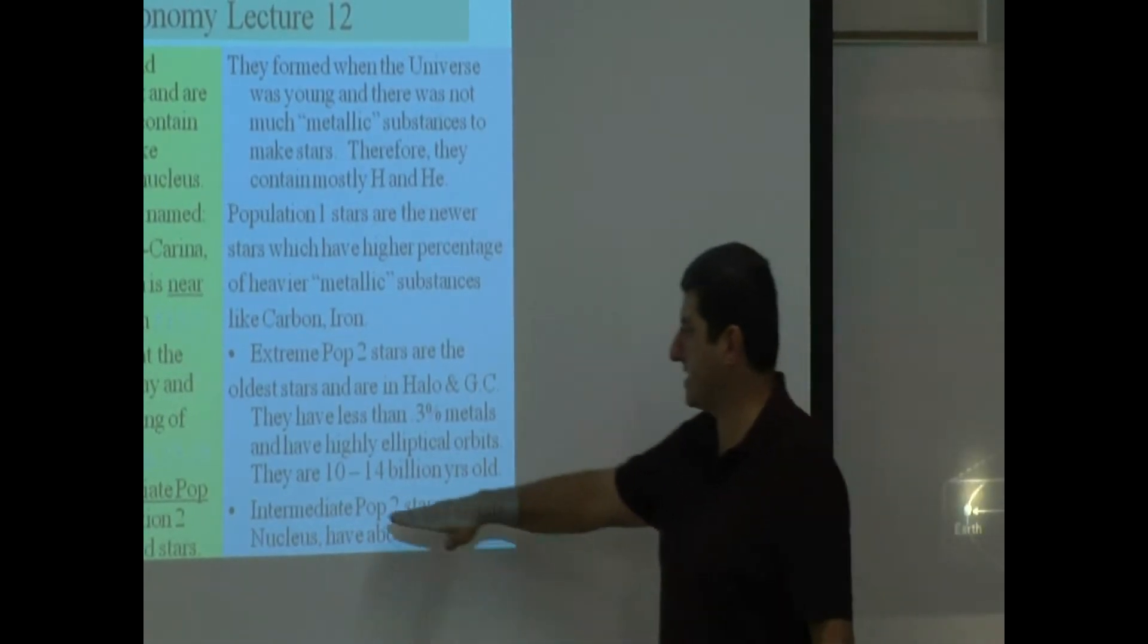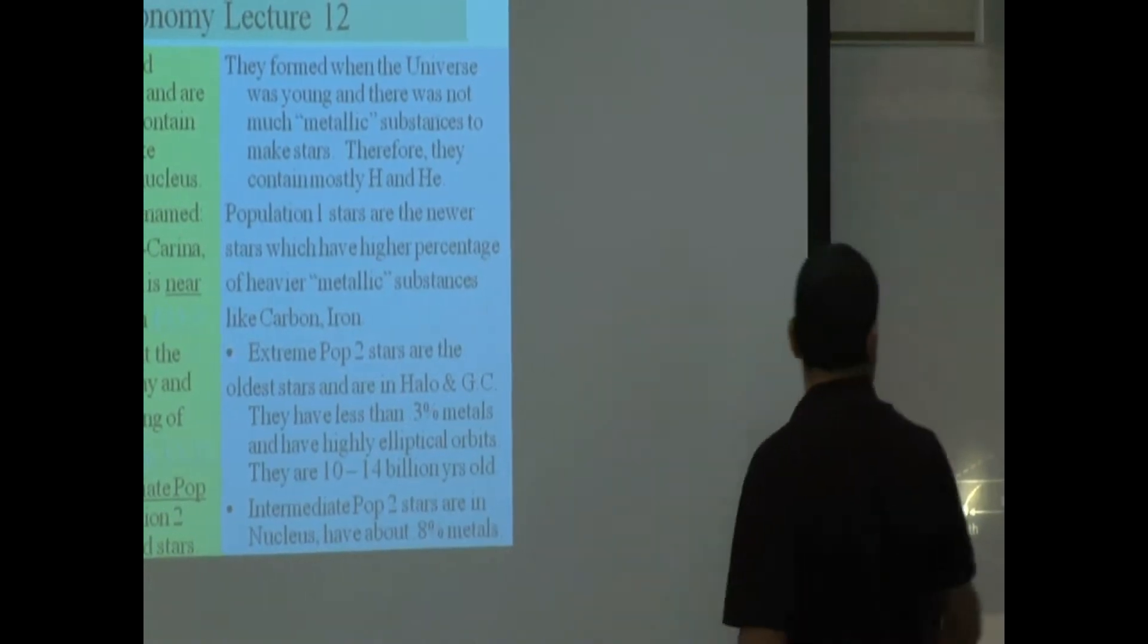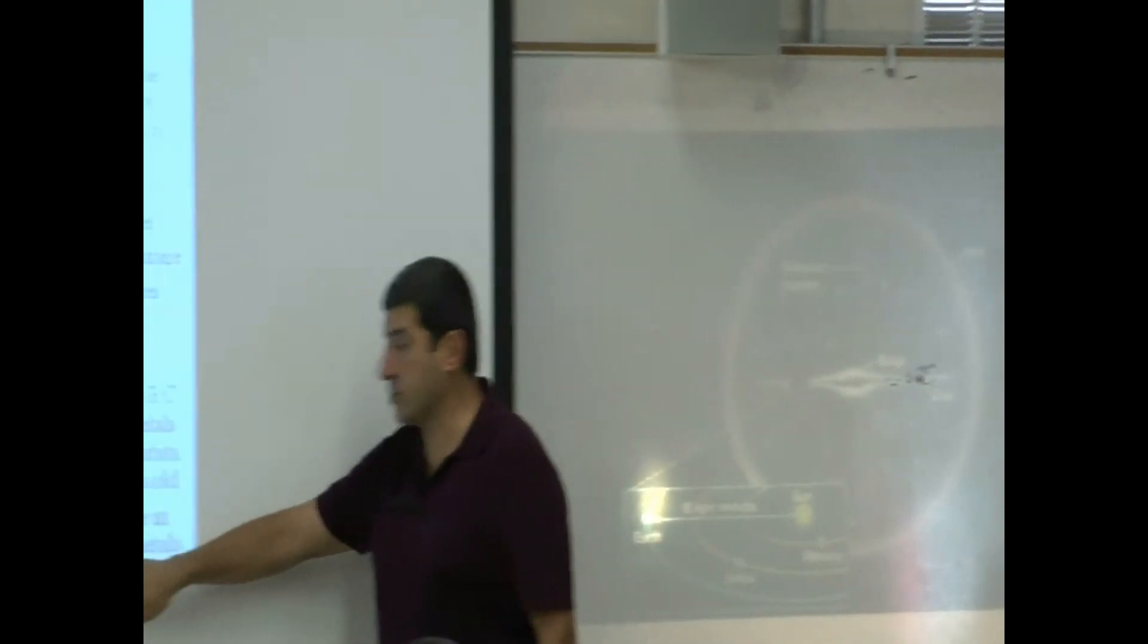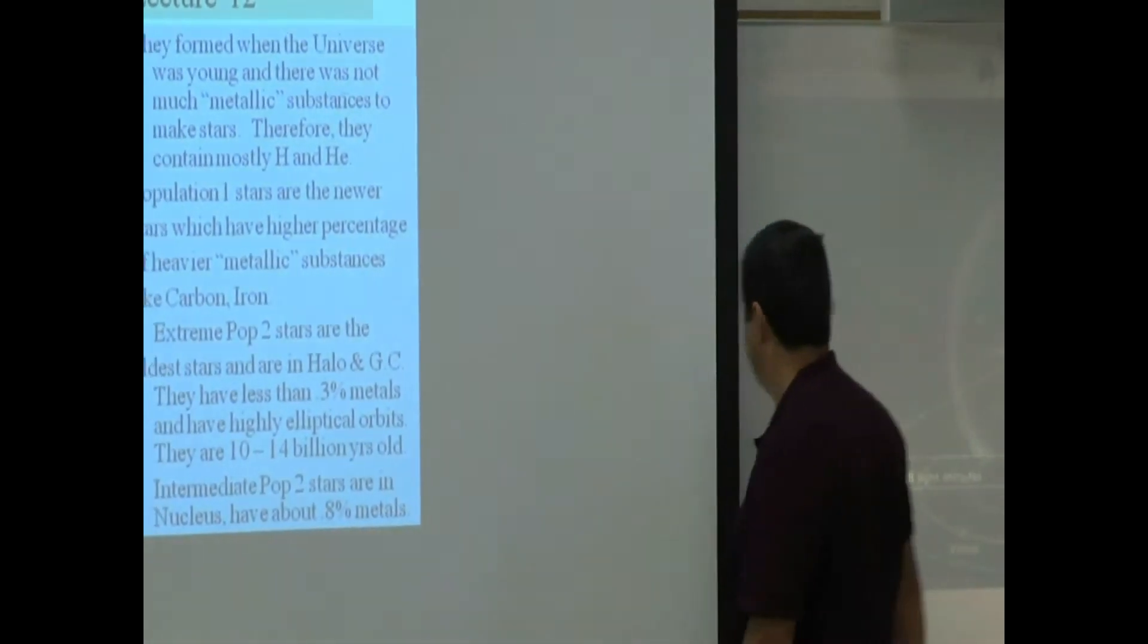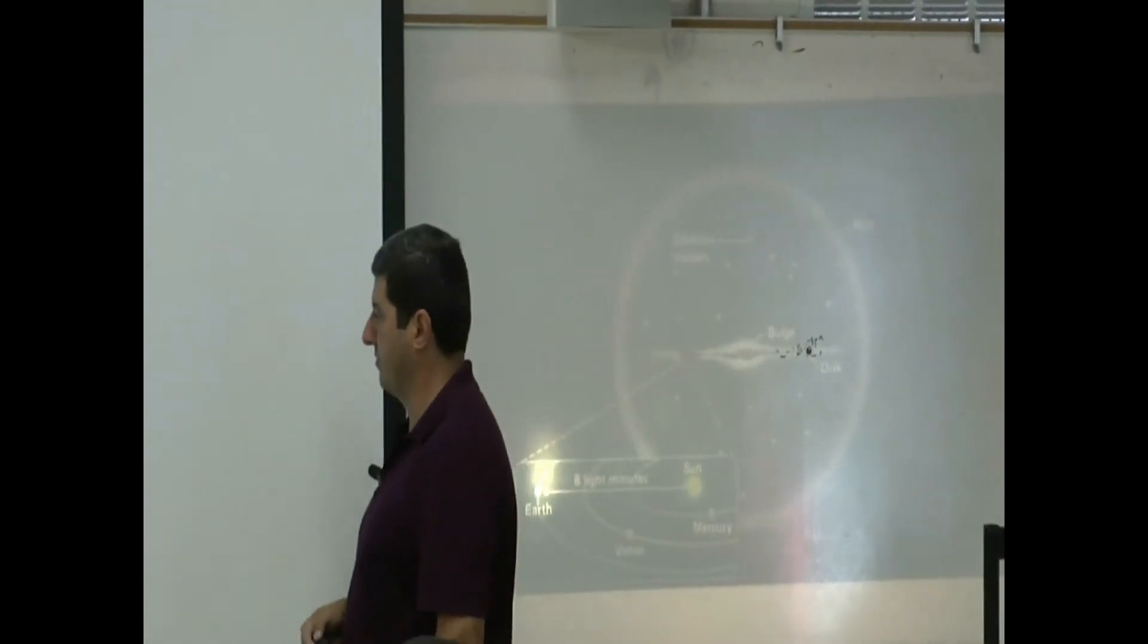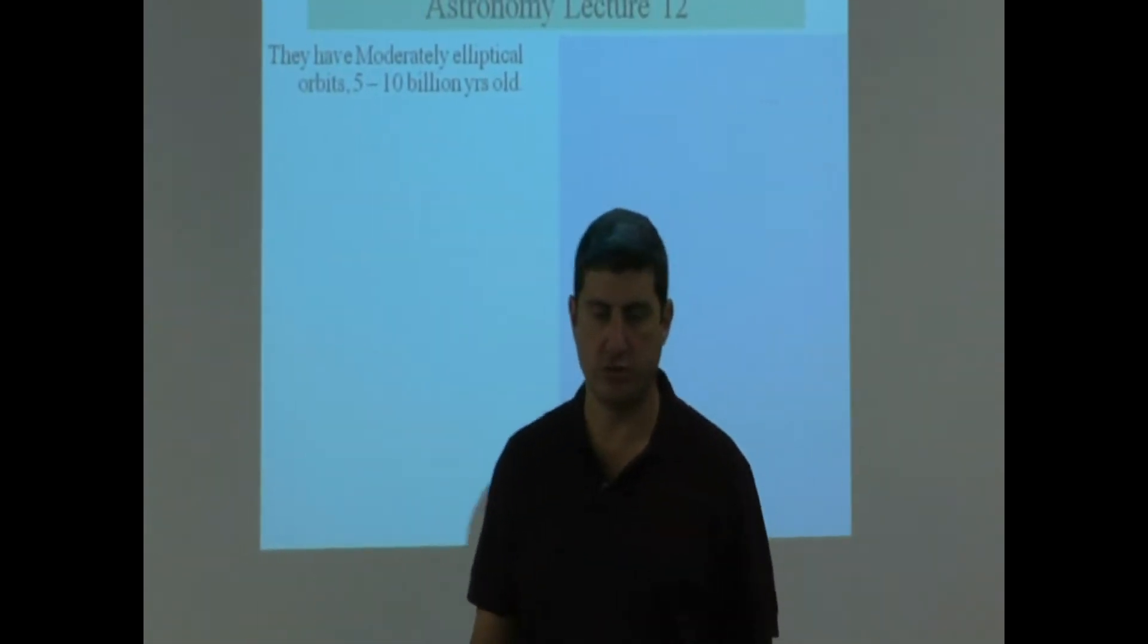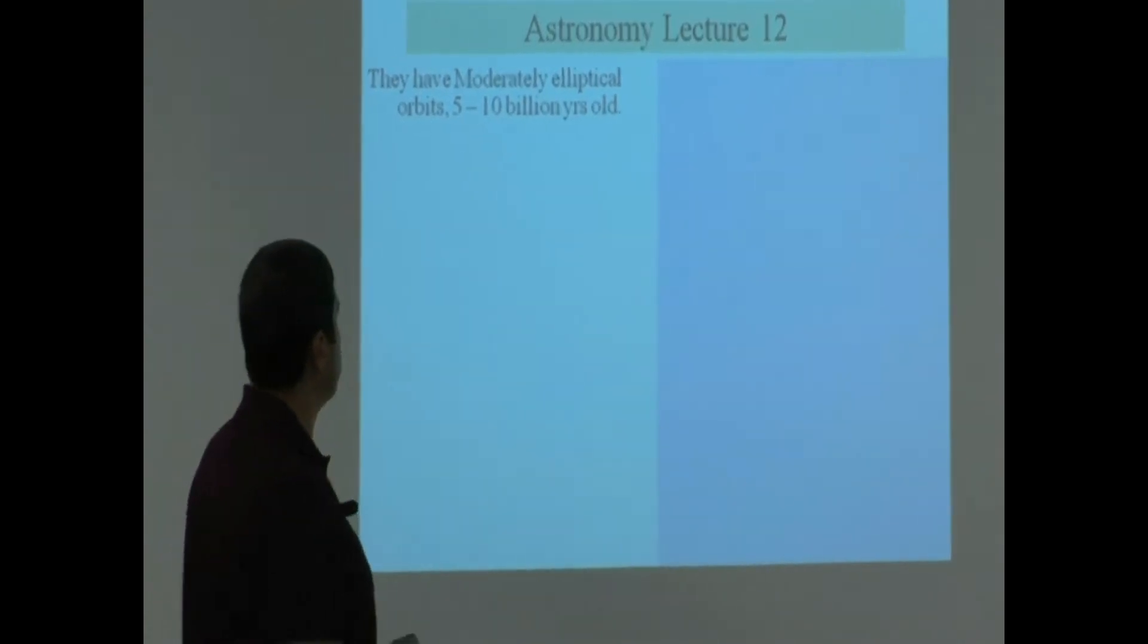Intermediate Pop 2 are slightly younger than those guys. They are in the nucleus, so they are here in the nucleus of the Milky Way. They have about 0.8% metal, so they formed later in the generation of the universe. And they go around the center of the Milky Way also in more or less elliptical orbits. They have moderately elliptical orbits, and they are 5 to 10 billion years old. See, the other ones were 10 to 14 billion years away from us, and these ones were from 5 to 10 billion.